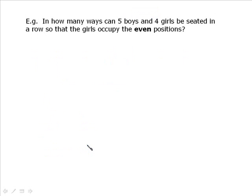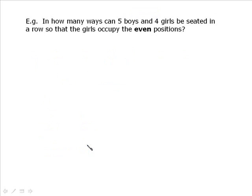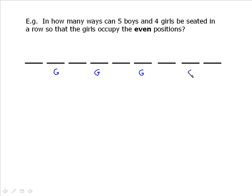In how many ways can 4 boys and 5 girls be seated in a row so that the girls occupy the even positions? Before doing anything else, let's set up the slots. If girls occupy even positions, a girl must go in positions 2, 4, 6, and 8, and boys must occupy positions 1, 3, 5, 7, and 9.